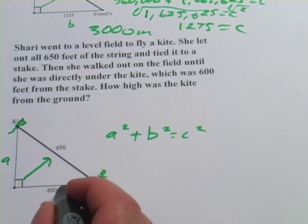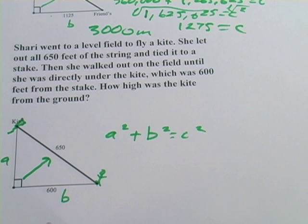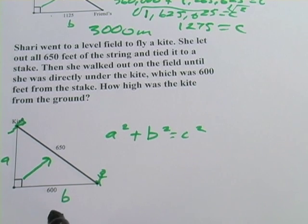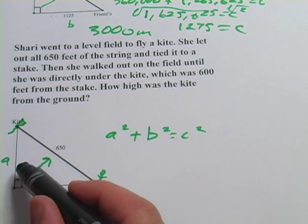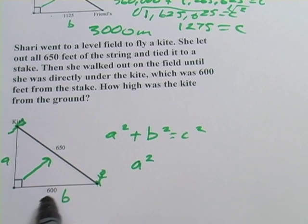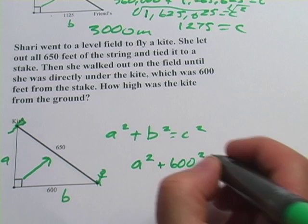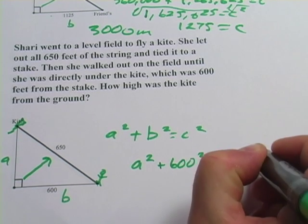We'll call this one a and this one b. It doesn't matter so much which one is a, which one is b. It's really important which one is c. And now we can start filling into the formula the sides that we have. I don't have a. I don't have a number for that. So I'm just going to leave the a squared as a squared. I do have b, that's 600 squared. And I have c, that's 650 squared.